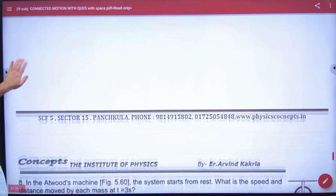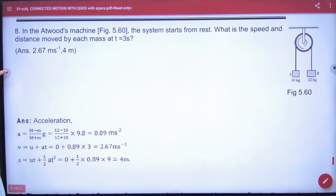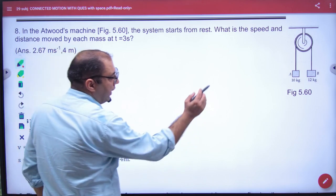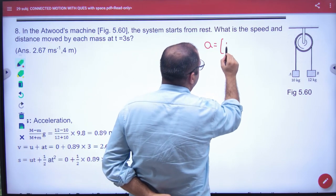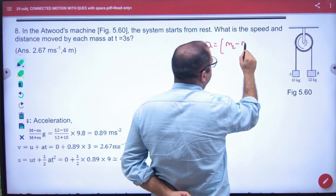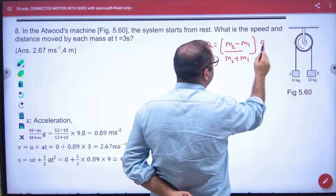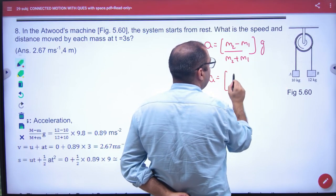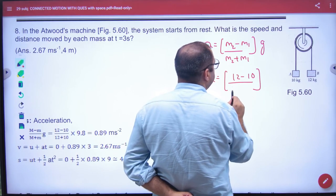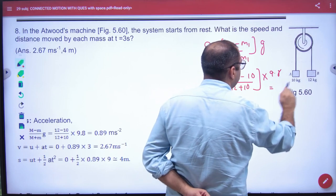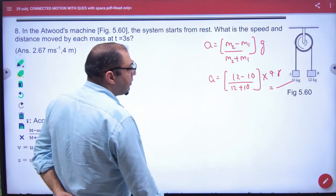After 7th, question number 8th, I will tell you. Atwood machine. What is the speed and distance moved by each mass in time T is equal to 3 seconds? The first question is acceleration. I have done two blocks for acceleration. So acceleration will be equal to 12 minus 10 divided by 12 plus 10 into G means 9.8. So understand, you have removed acceleration.